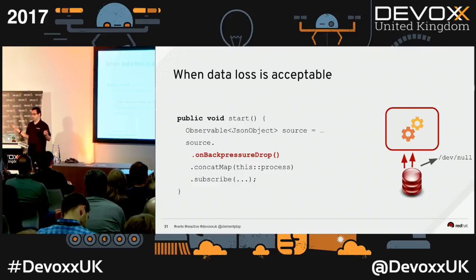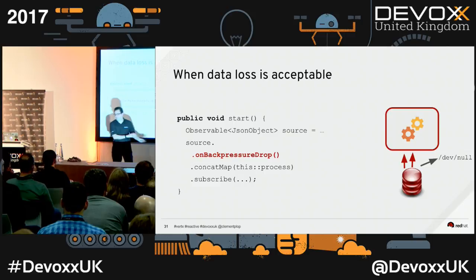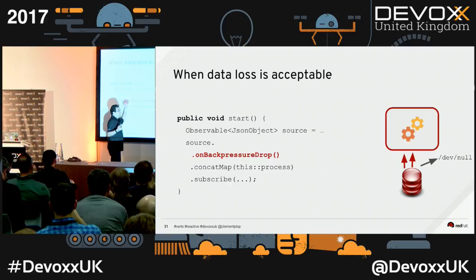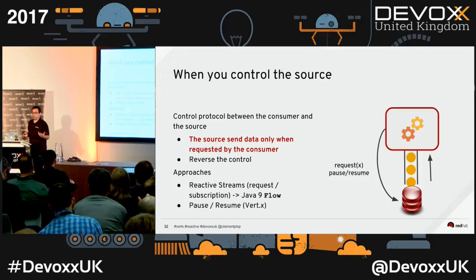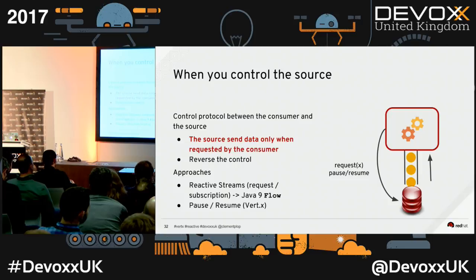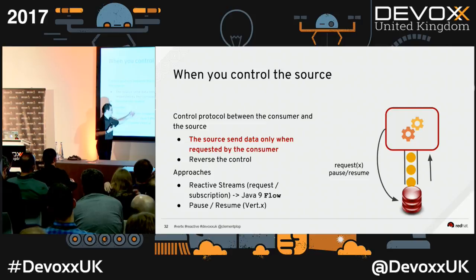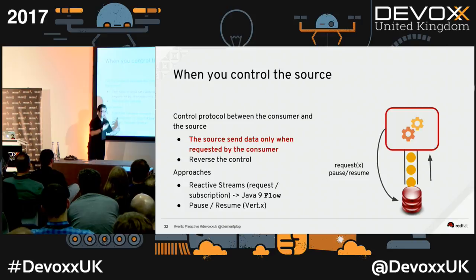What can we do? First, we can just drop — I have too much stuff, I don't care. We all did that with our to-do list. But sometimes we can't drop, and then we need to really implement back pressure. There are many back pressure models. Vert.x has a simple one: pause and resume. Reactive Streams proposes another one based on requests and subscriptions. Back pressure is just a mismatch between the consumer and the source.